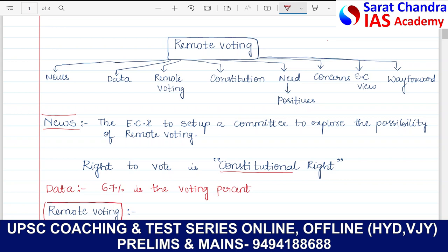In the current affairs part, we will first talk about the pre-diagram of the things that will be covered under this topic. Coming to remote voting, it is one of the topics related to electoral reforms. We will be analysing the data, meaning of remote voting, constitutional provisions, the need and positives of remote voting, challenges or concerns, and the Supreme Court's view and way forward.